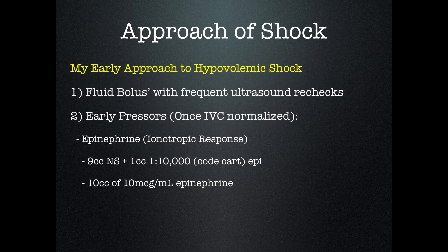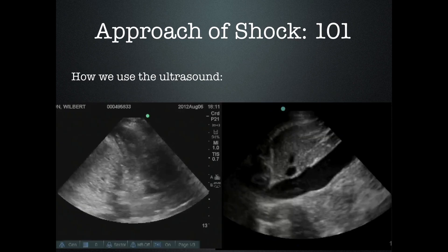My approach: I give boluses of fluid but I don't guess. Their IVC is flat and they're hyperdynamic — I give them a liter and then recheck the IVC. If it's still completely collapsing, I give them more fluid. There's not a fixed number — I don't stop at three liters or ten liters. I give them fluid until the IVC is somewhere collapsing between that 20 to 80 percent mark. I don't care if they're a dialysis or heart failure patient. Once the IVC is full from that standpoint, then I move on. If they're still hypotensive after fluid resuscitation guided by ultrasound, I'll go to pressors.